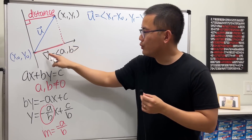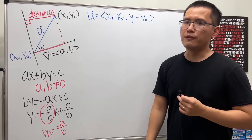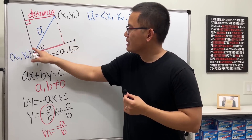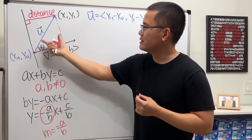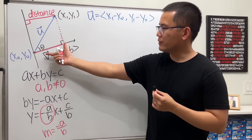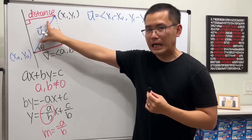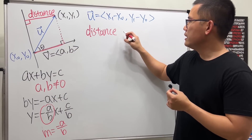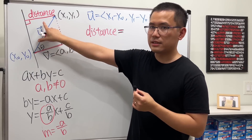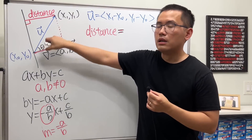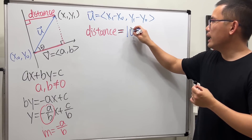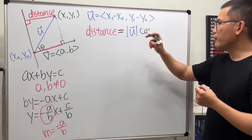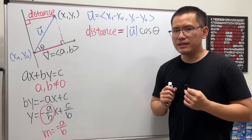We have vectors u and v with angle θ between them, forming a right triangle. The distance is the adjacent side and the magnitude of u is the hypotenuse, so we use cosine: distance = |u| · cos θ, where |u| is the magnitude of vector u.